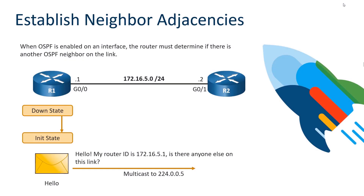When we begin our discussion of OSPF operational states, we need to focus on OSPF activation. OSPF is going to be enabled on an interface, and when that happens, your OSPF router must determine if there's another OSPF neighbor on that same link. To do this, we start in the down state, and when we go to send a hello, we start to initialize.